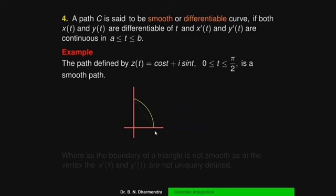A curve consisting of a finite number of smooth curves joined end to end is called a contour. Examples include a circle, triangle, or square — each considered as smooth pieces joined at their endpoints.